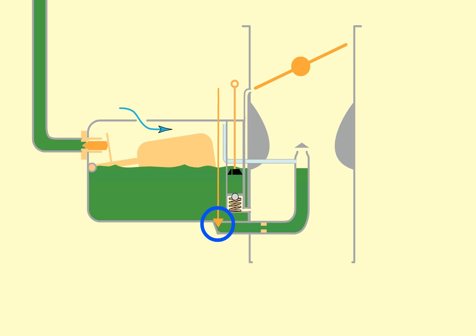To shut the engine down, the mixture control is moved into idle cutoff, which stops the fuel flow to both the main jet and the idle jet.